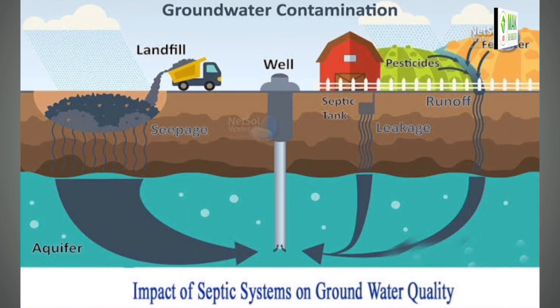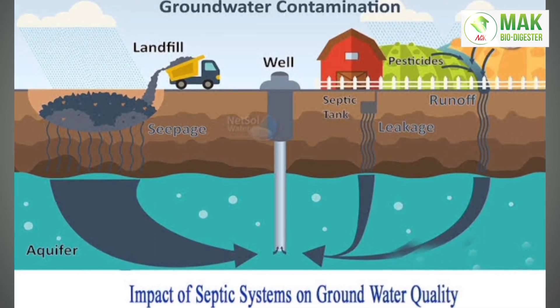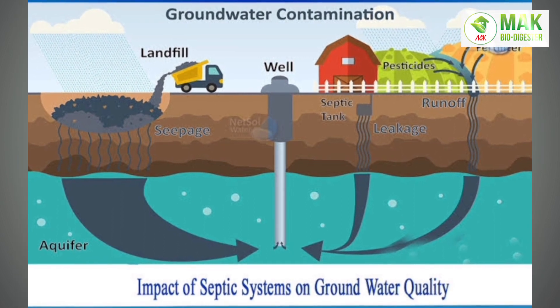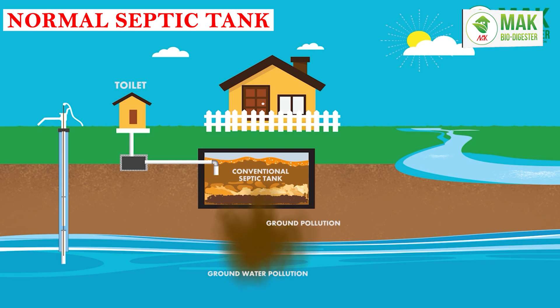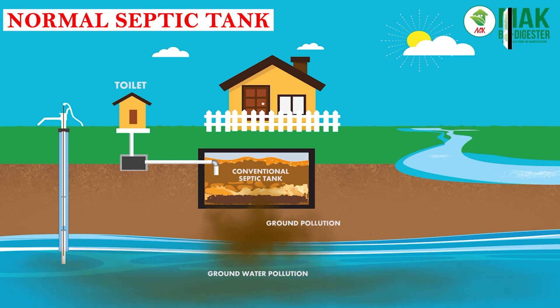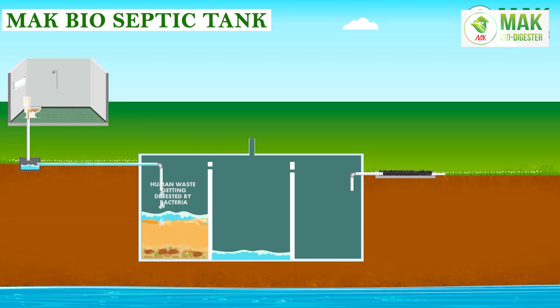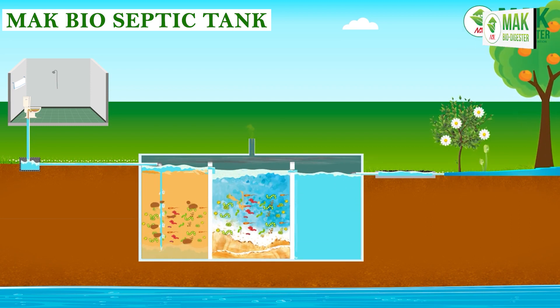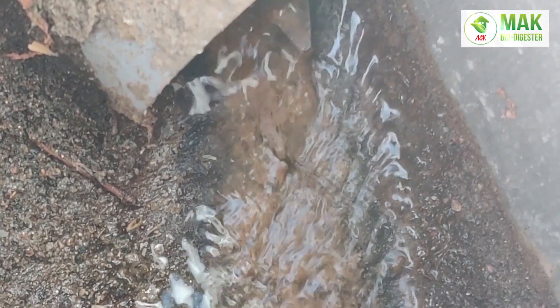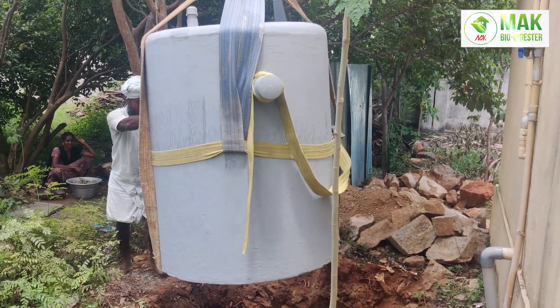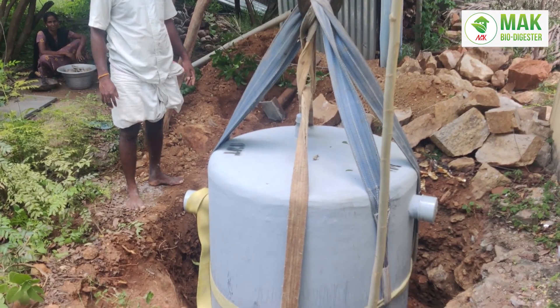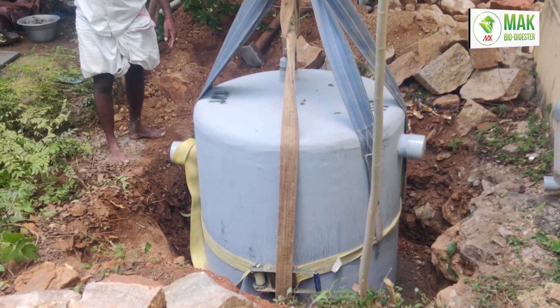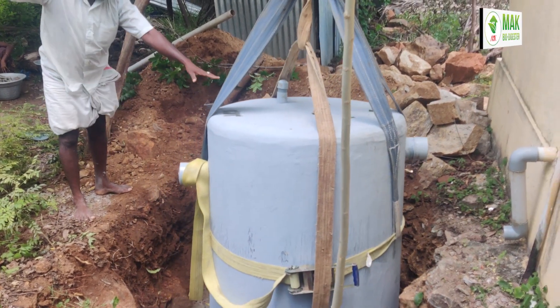There is a leakage in the bucket and there is also drinking water in the bucket. So there is a situation where drinking water is contaminated. If you use a normal safety tank and want to use it as a garden, you can use it as a garden. If you take care of yourself, we will provide a good service to you and give you permission to make a promotion.